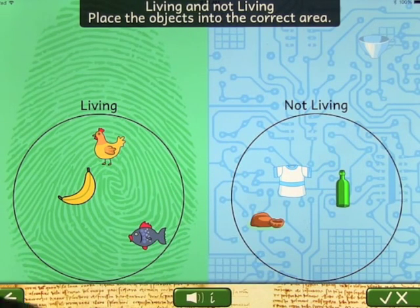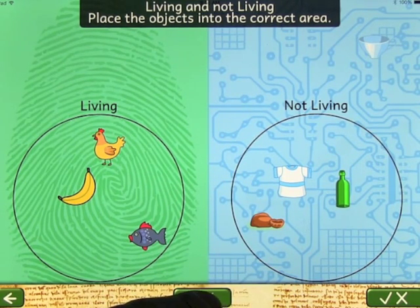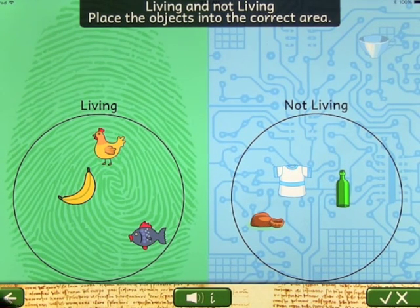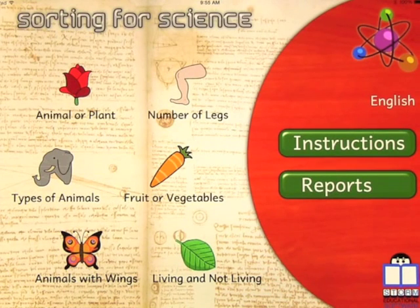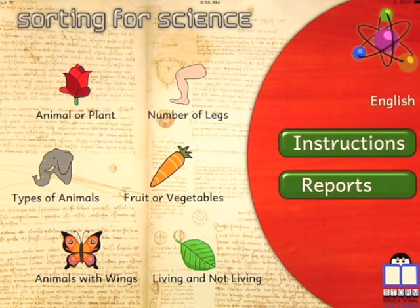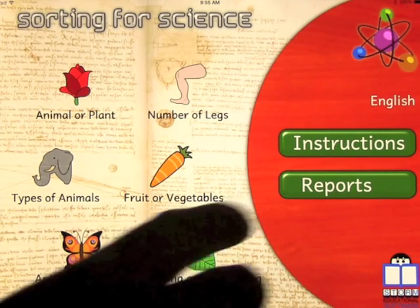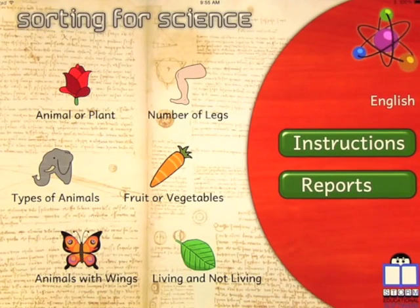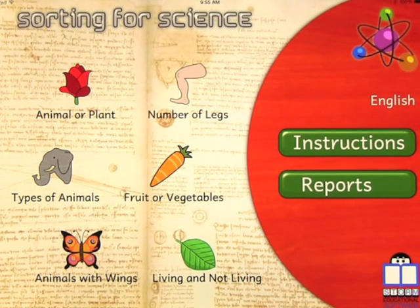If you want to hear the in-app instructions just press the button — it says: items need to be dragged from the top of the screen into the correct box at the bottom of the screen, and once an item has been placed it can be dragged into a new position. So the app is called Sorting for Early Science — it comes in English and Spanish, gives reports on how far you've gone, allows you to reset, and it's very interesting. I suggest you check it out.